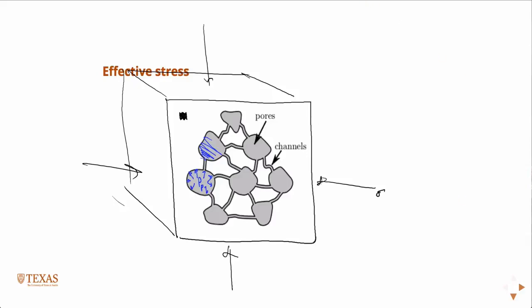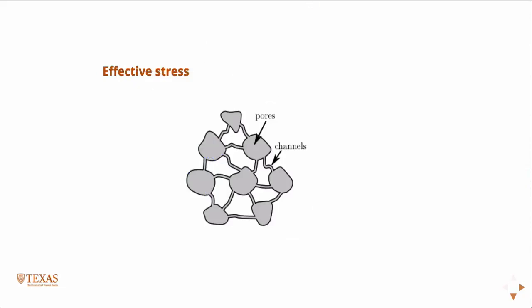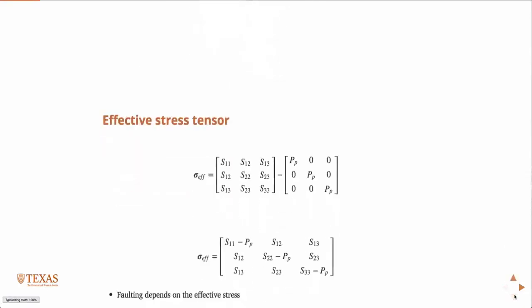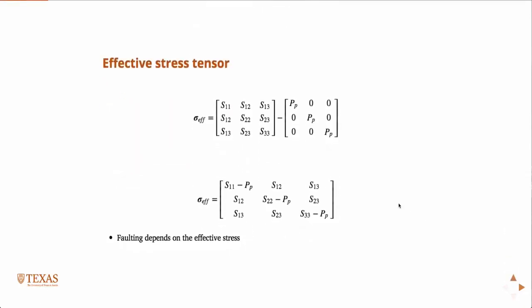What we do, how we account for that, is with something called an effective stress model. The effective stress tensor is the stress due to tectonic motion minus the pore pressure. Because pore pressure is a scalar, it must act isotropically, meaning it can't impart any shear stresses. So the part of the stress tensor it acts on is just the diagonal, the normal components of stress.